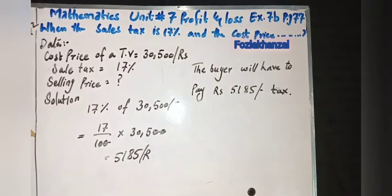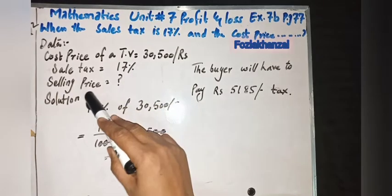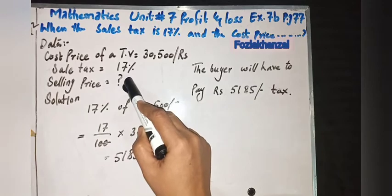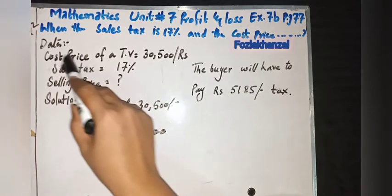Then question number two: When the sales tax is 17% and the cost price of a television set is 30,500 rupees, calculate the amount the buyer will have to pay. Please correct the question. According to the data, cost price is given as 30,500 rupees, sales tax is 17%. Find the selling price. We will find SP; CP is given, and sales tax percent is given.